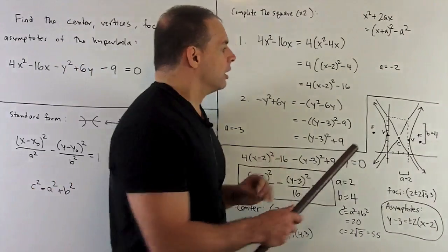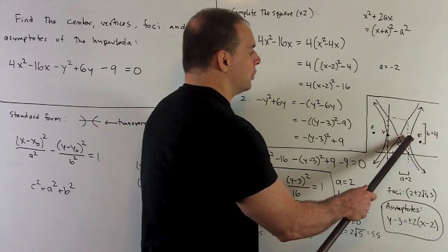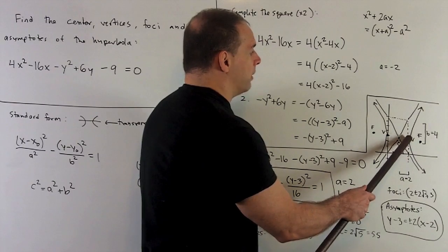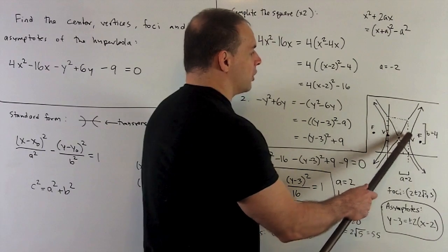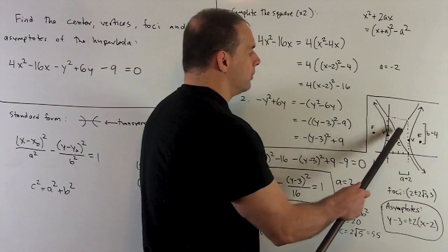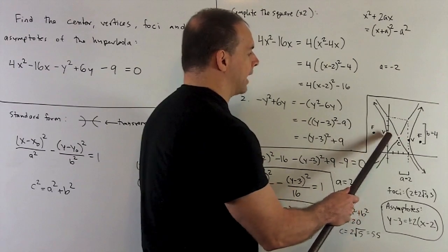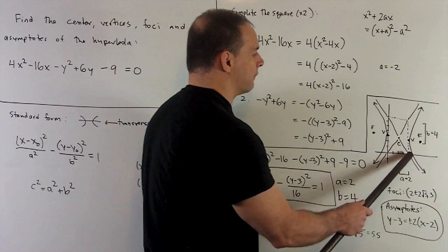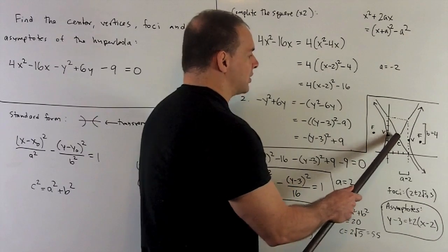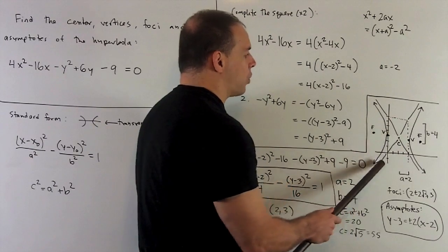So, I'm at my center. I'm going to go over 2, and then we're going to go up 4. So, that's going to carve out a rectangle. I go back 2, up 4, back 2, down 4, over 2, down 4. That's a rectangle. The asymptotes are just given by connecting the corners.